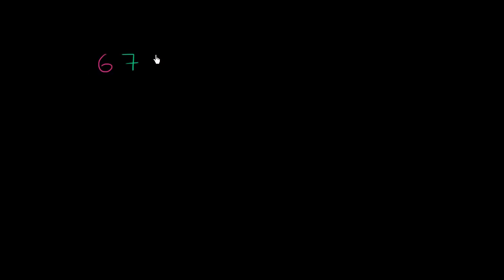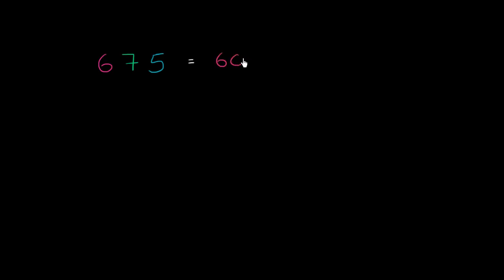Let's think about different ways that we can represent the number 675. The most obvious way is to just look at the different place values. The 6 is in the hundreds place — it literally represents 600.